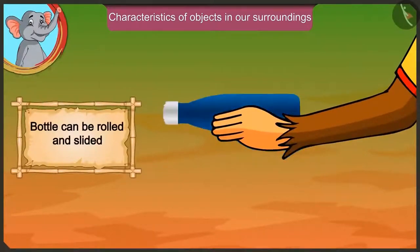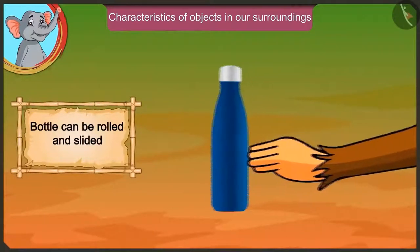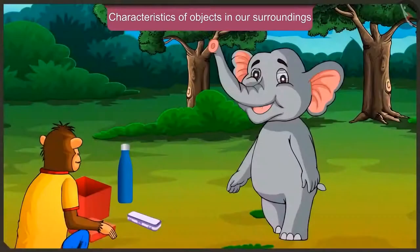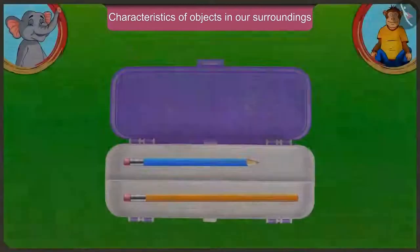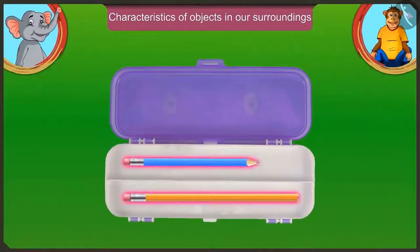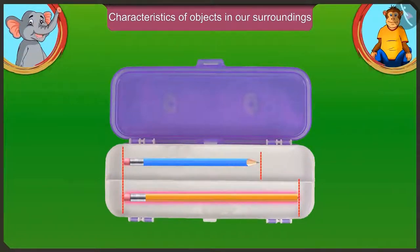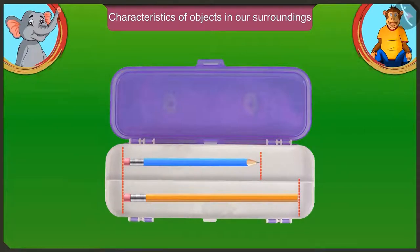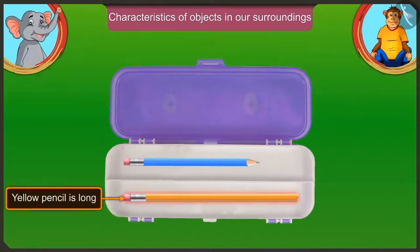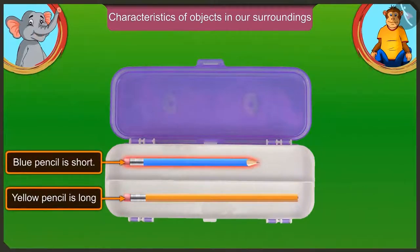We can roll this bottle and also slide and move it. There are two pencils in the pencil box. The yellow pencil is longer than the blue pencil, which means the blue pencil is short. The yellow pencil is long and the blue pencil is short.